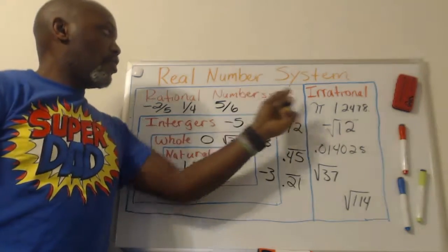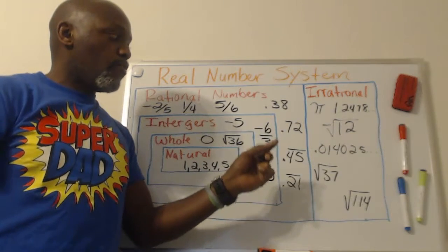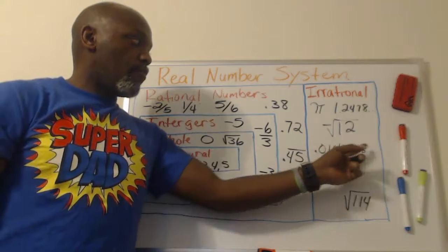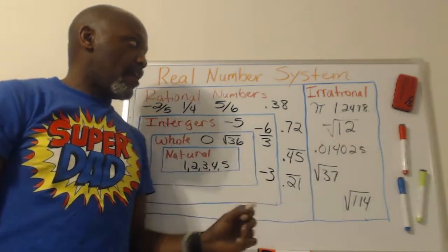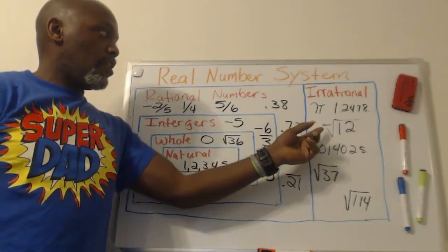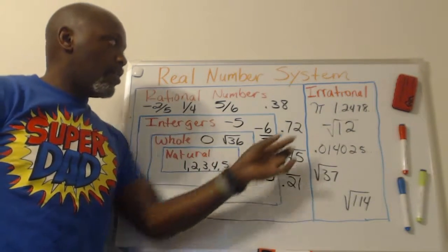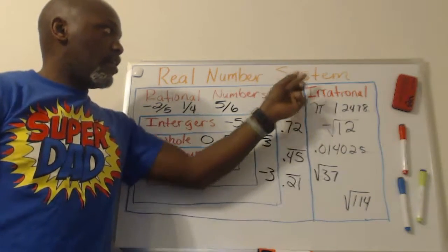Then you have irrational numbers. Irrational numbers are numbers that do not repeat themselves and they don't have a pattern. So if it is not a perfect square, that means it's irrational.